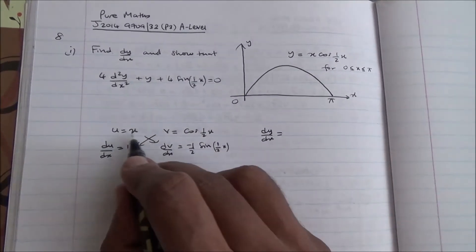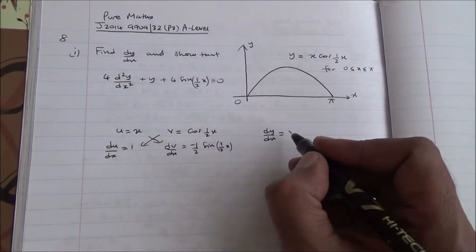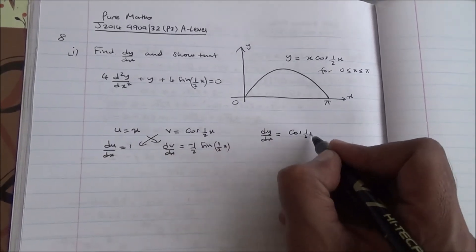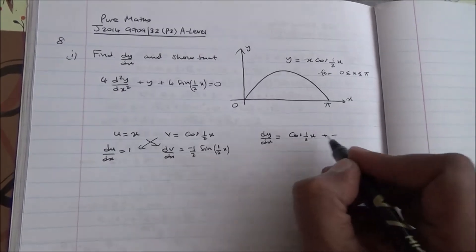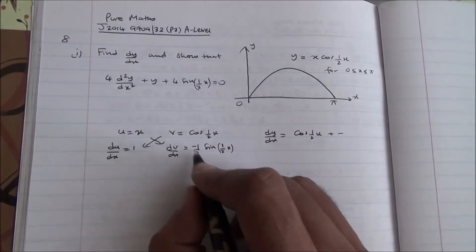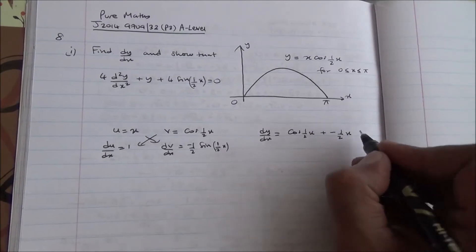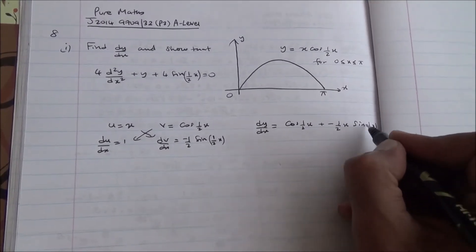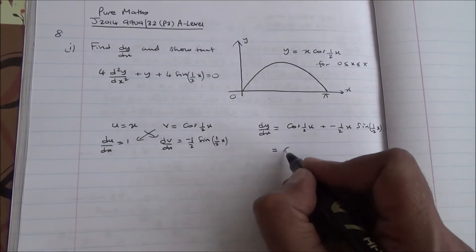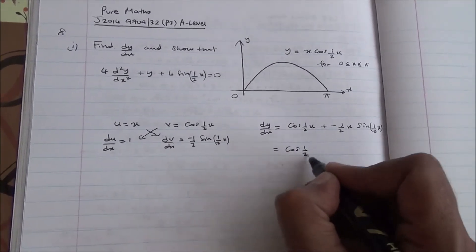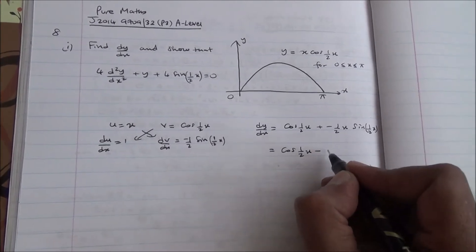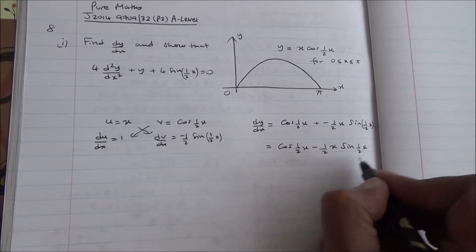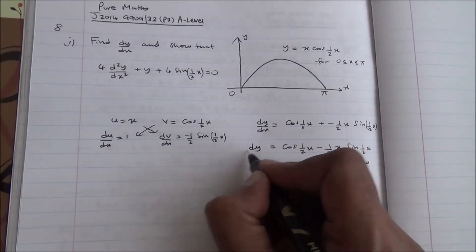So dy/dx equals u dv/dx plus v du/dx, which gives cos(x/2) minus half x sin(x/2). So here we have dy/dx equals cos(x/2) minus half x sin(x/2).